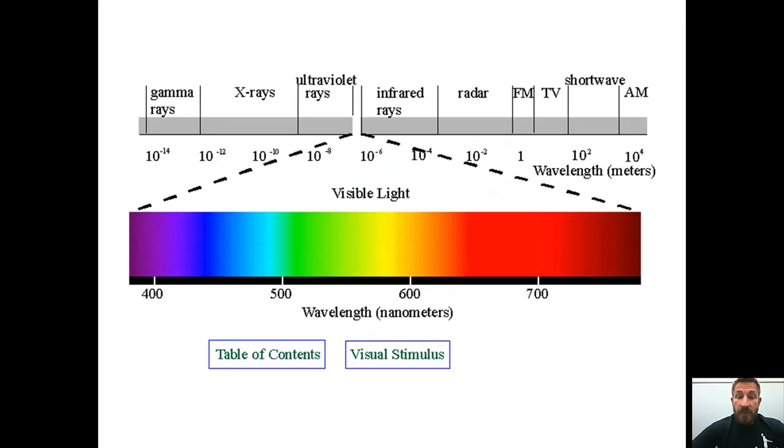The electromagnetic spectrum includes things that are high energy and low energy. High energy parts of the electromagnetic spectrum include gamma rays, x-rays, and ultraviolet. Low energy includes infrared, radar, FM, TV, shortwave, radio, and AM waves.